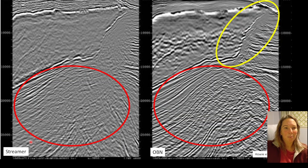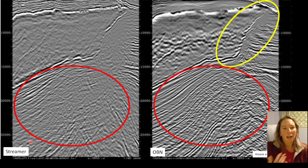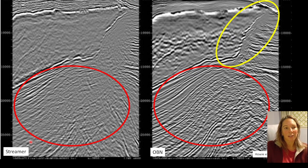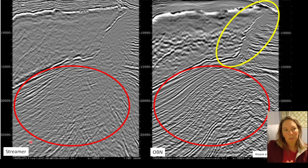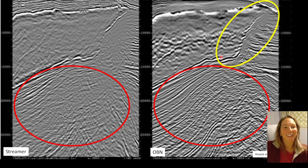This is a nice comparison showing the difference between two marine acquisition methods: traditional streamer acquisition on the left and ocean bottom nodes on the right. You can see how the different acquisition methods affect imaging capability in the final product. Notice how the ocean bottom method seems to provide better illumination of the more complex structure — circled in yellow — compared to the streamer data.